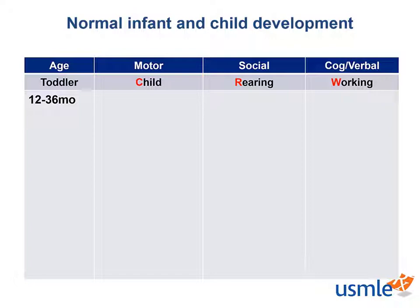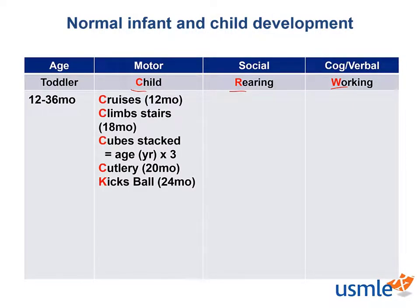Toddlers tend to act much differently. There is also the mnemonic CHILD REARING WORKING for this age group. By 1 year, most of them are already walking around and are able to climb stairs by 18 months. They are able to use forks and spoons by 20 months and are kicking balls by 24 months. Another good marker for motor development is that a child should be able to stack cubes by their age times 3 — so a 2-year-old should be able to stack 6 cubes.